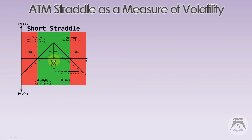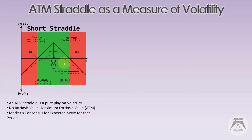The at-the-money straddle is a special case of a short straddle — it is a pure play on volatility. When you have a short straddle, you're right at the point where extrinsic value is at its maximum peak for both put and call. It's approximately at-the-money — not exactly, but sufficient for our purposes. Right at-the-money you have maximum extrinsic value, and when you sell a straddle you have no intrinsic value at all.